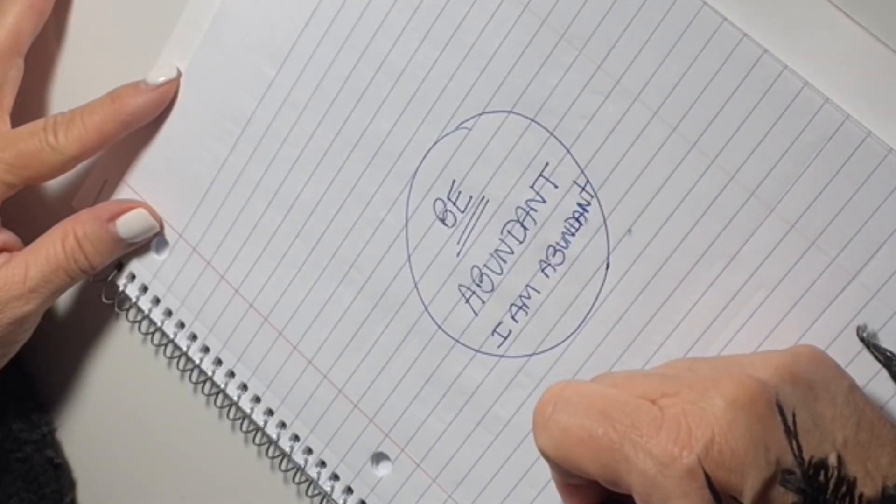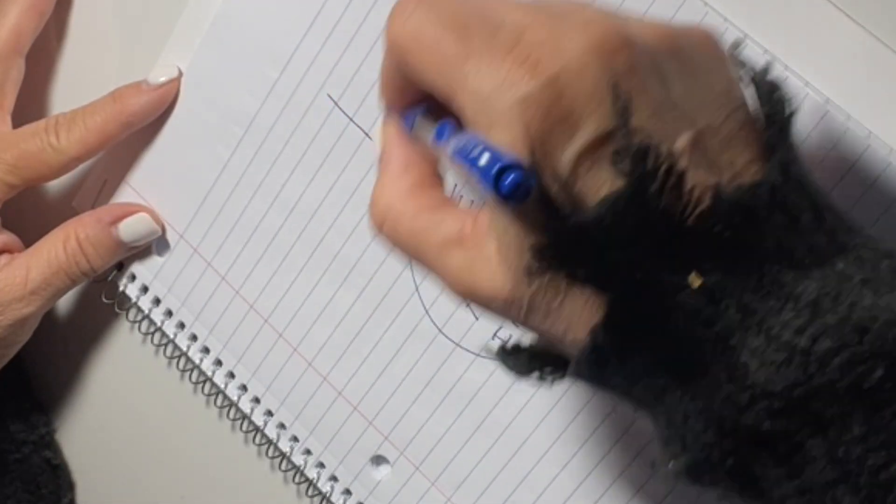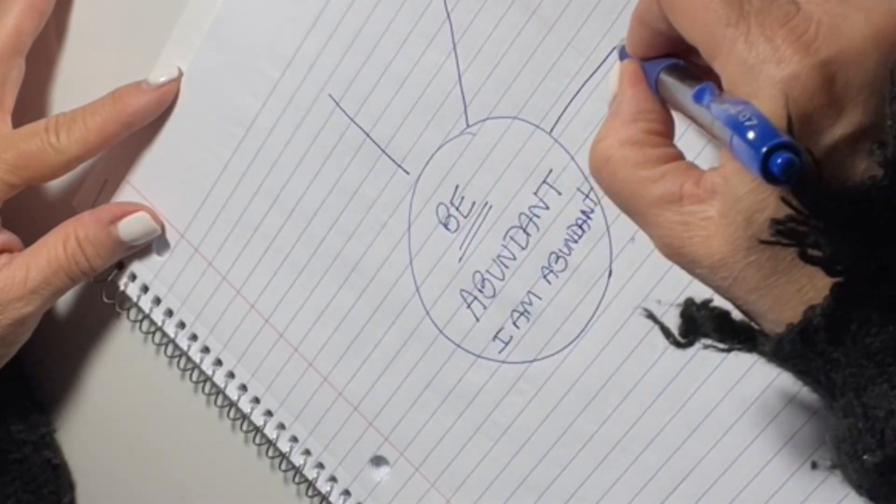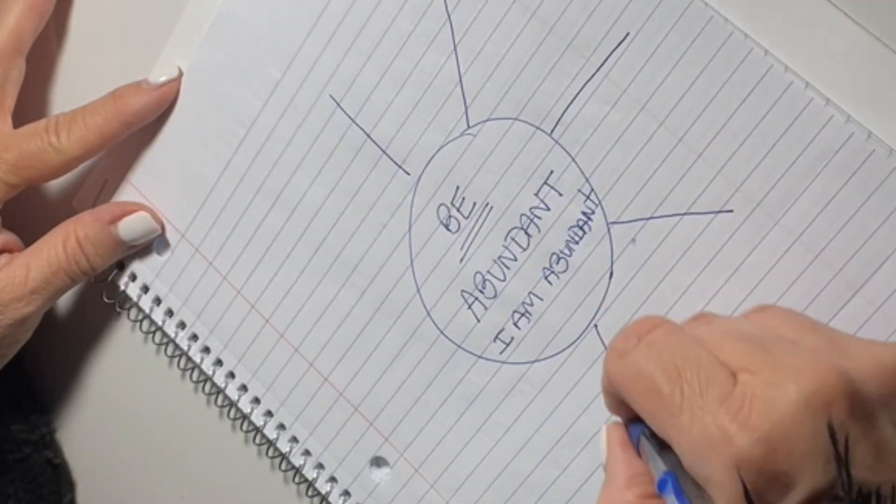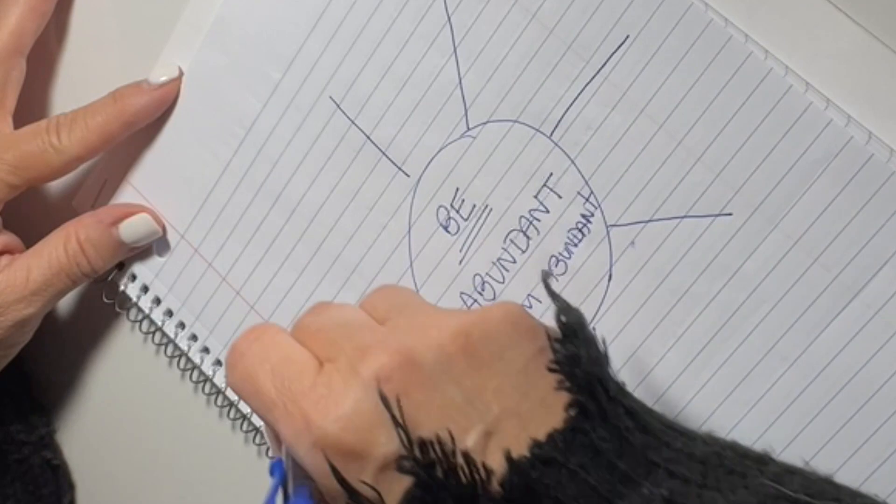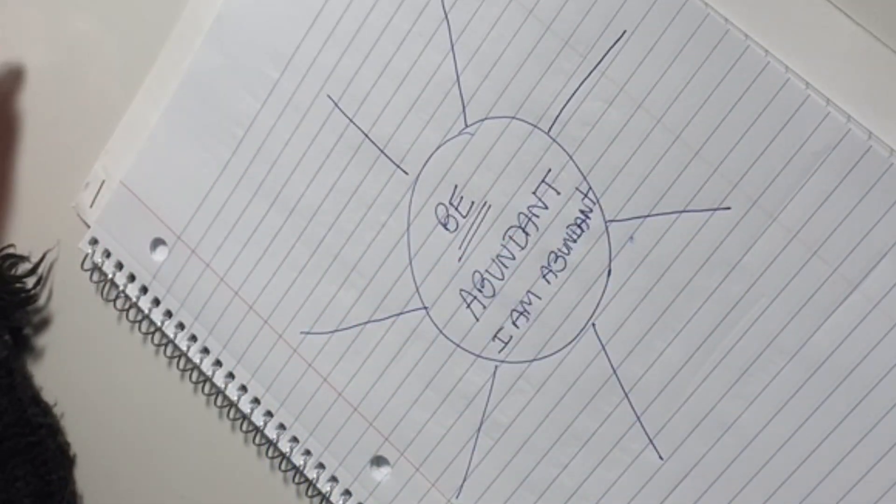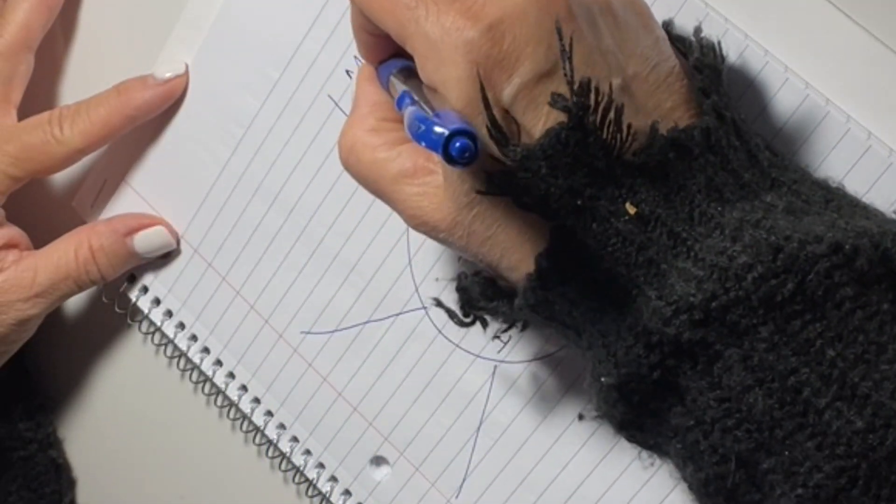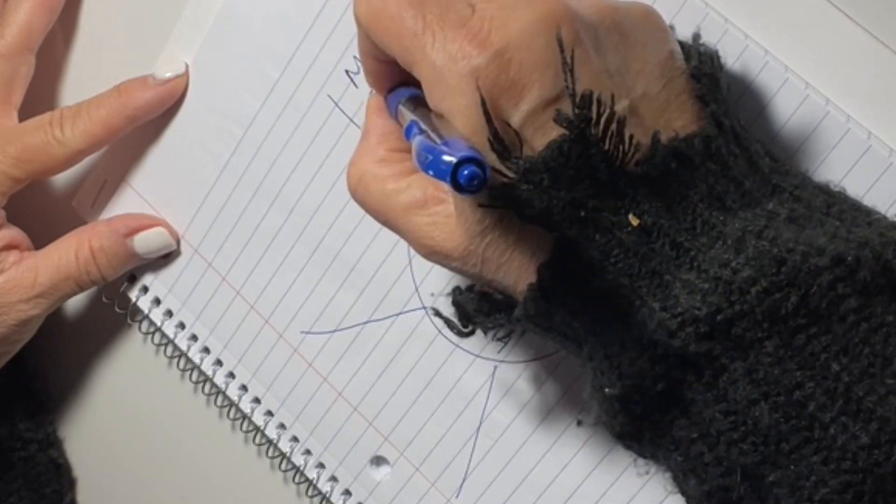Be abundant. Today we're going to work with abundance, the abundant energy. Then I create this space around the main circle where I will write sentences that will reinforce that main belief. Being abundant.